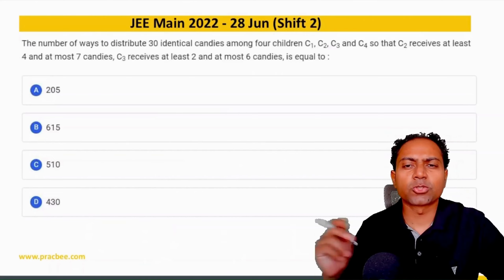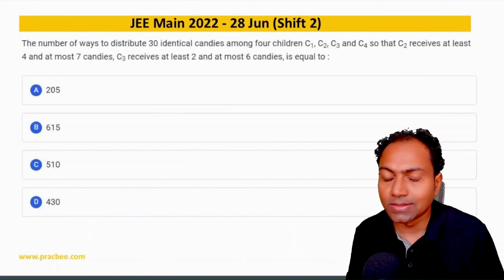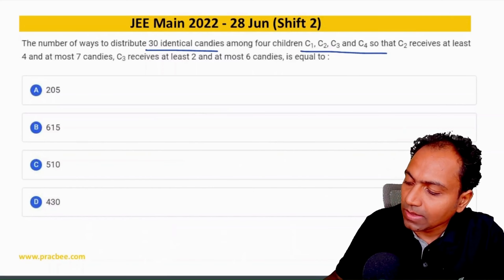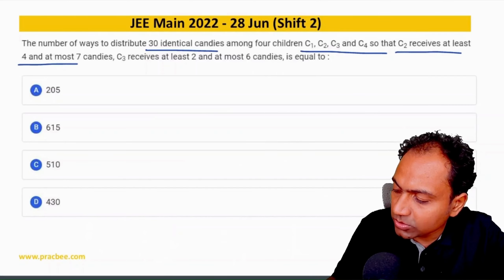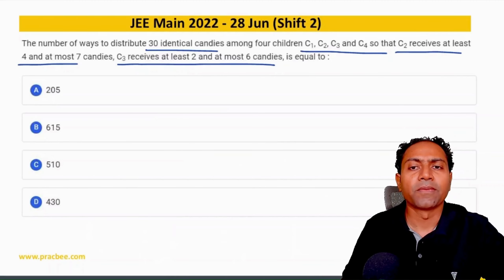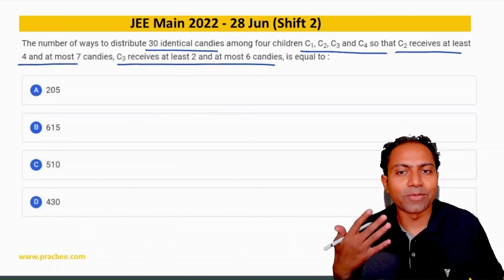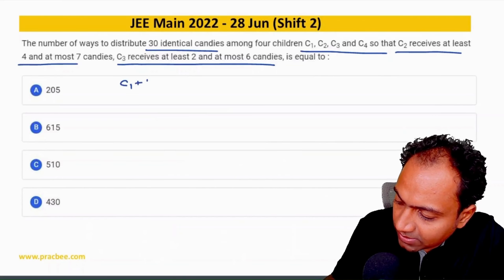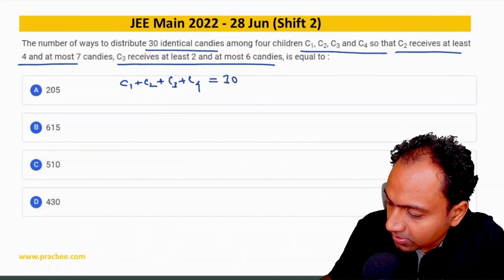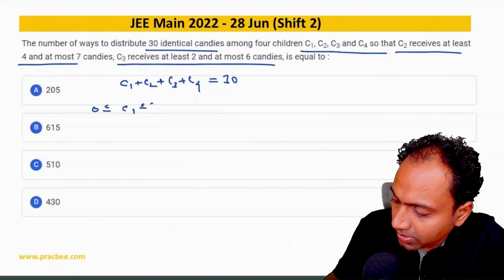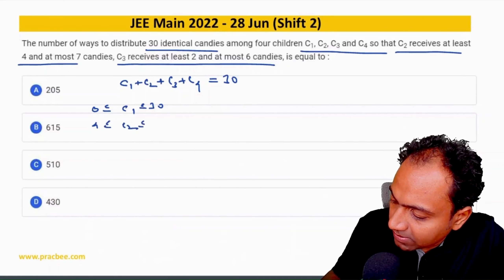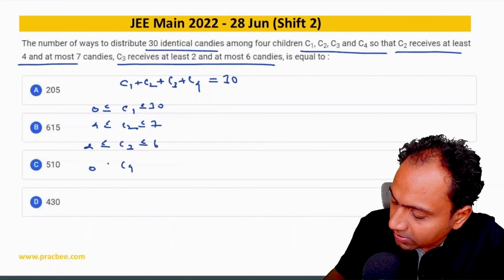For this JEE 2022 question we need to use the multinomial theorem because there are multiple constrained cases. The question says 30 identical candies are given to four children C1, C2, C3, C4. C2 gets at least 4 and at most 7, C3 gets at least 2 and at most 6, while C1 and C4 range from 0 to 30.